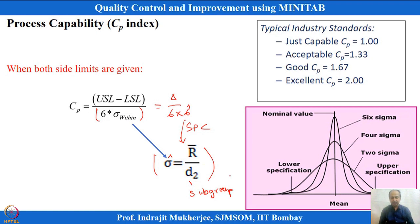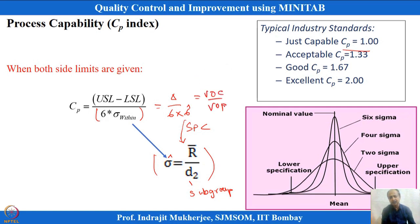MINITAB does this automatically — you only need to specify how to calculate sigma, and MINITAB will calculate it for you. When the ratio of voice of customer to voice of process equals 1, it means the process variability is consuming the full tolerance from LSL to USL.